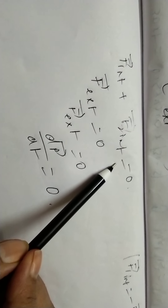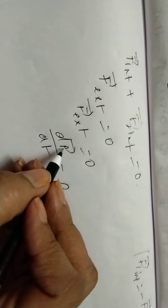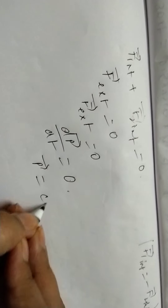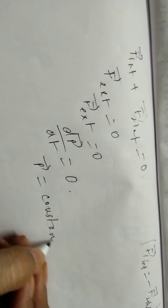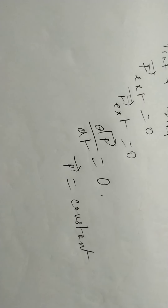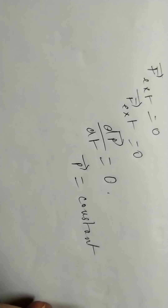This means that if there is no external force acting on the system, the rate of change of momentum becomes zero, which simply shows that p vector is constant. This gives us the idea that in the absence of an external force, the total momentum of a system remains constant and does not change with time.